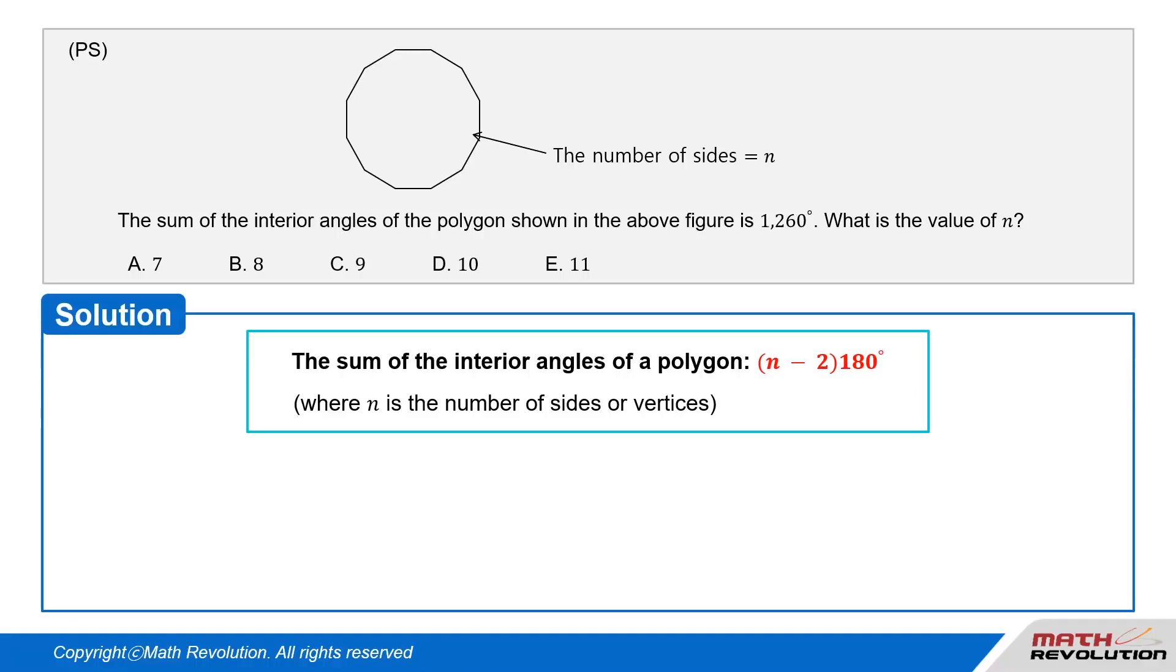Solution. The sum of the interior angles of a polygon is given by the formula (N - 2) × 180 degrees, where N is the number of sides or vertices.